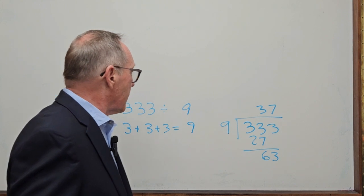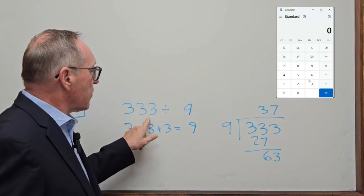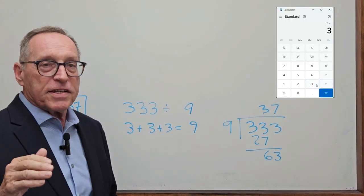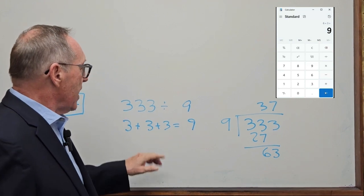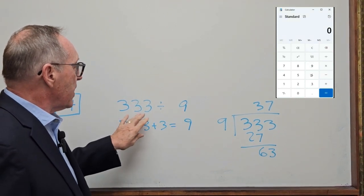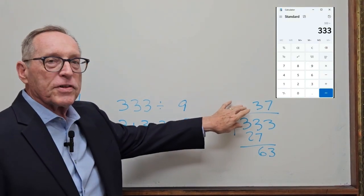Take any number, and on the board here, I've got threes. Take 3, 3, 3. That equals nine if you add those up, and divide 333 by nine, you get 37.